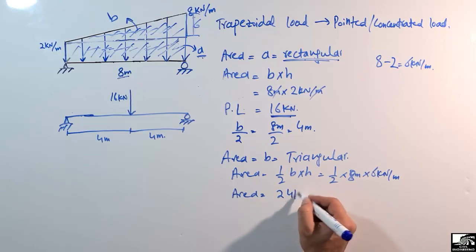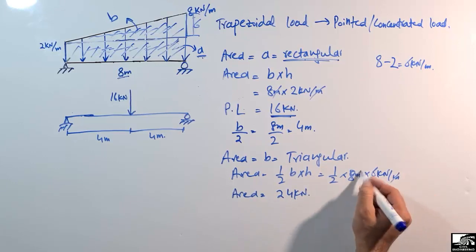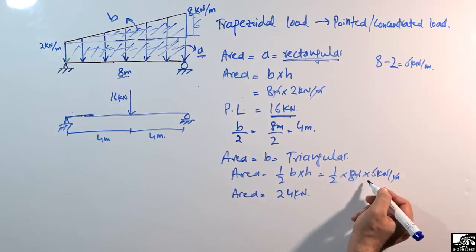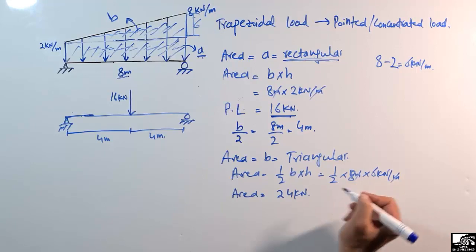Calculating: ½ × 8 × 6 = 24 kN. The meters cancel, giving us 24 kN, which is the pointed load from the triangular part.